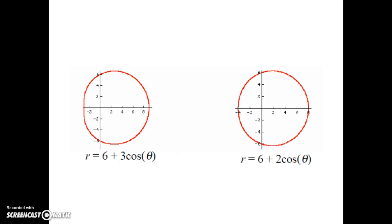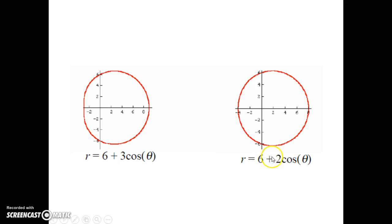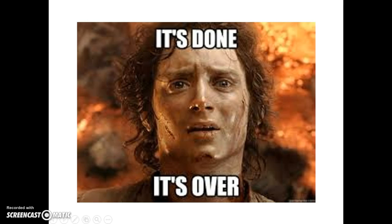For R = 6 + 3 cos theta, A is 6 and B is 3. Since 6 is greater than 3, we expect a convex limacon on the positive x-axis. The distance along the perpendicular axis is A = 6, the far end is A plus B = 9, and the near end is A minus B = 3. For a similar example with B = 2: A plus B = 8 and A minus B = 4. Come to class next time and we'll practice all three types of limacons.